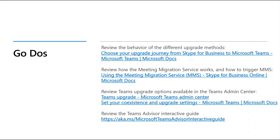Now that we have taken a look at the content, here are some go-dos. Make sure you review the behavior of different upgrade methods, including the sample case study on your upgrade journey from Skype for Business to Microsoft Teams. Understand how the meeting migration service works and how to trigger it for a specific user. Review the Teams upgrade options available in the Teams admin center, and walk through the Teams advisor interactive guide.